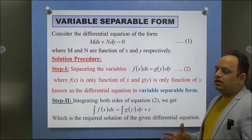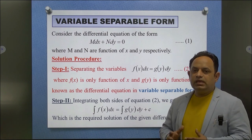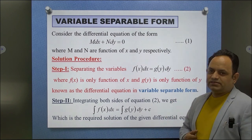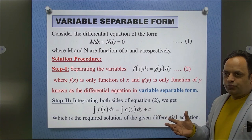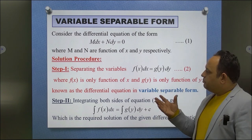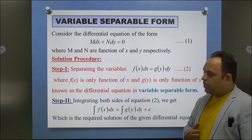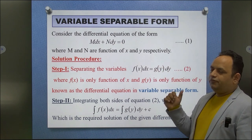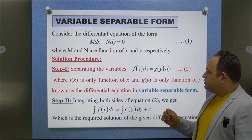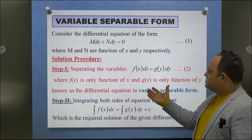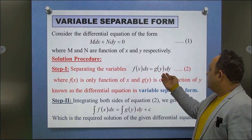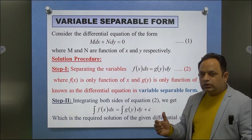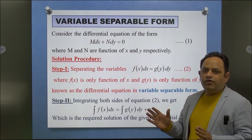For the variable separable form, consider the given differential equation M dx + N dy = 0, where M and N are functions of x and y respectively. The solution procedure: first step, we separate the variables. We write f(x) dx = g(y) dy, where f(x) is only a function of x and g(y) is only a function of y. This type of form is called the variable separable form.